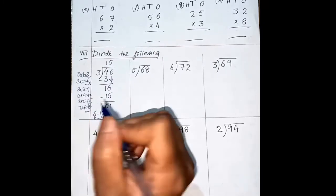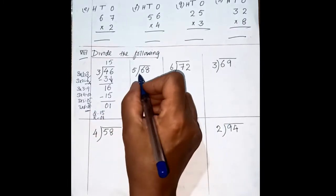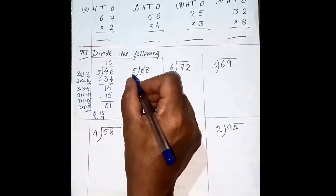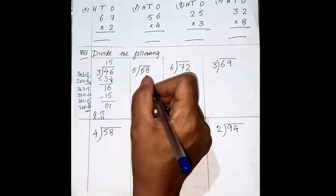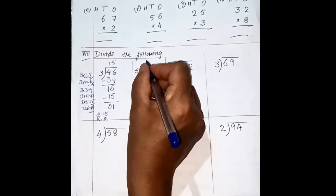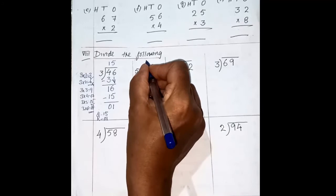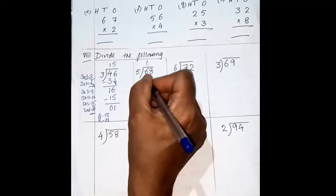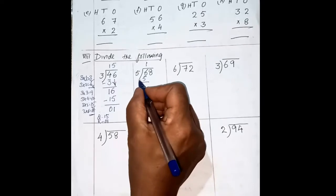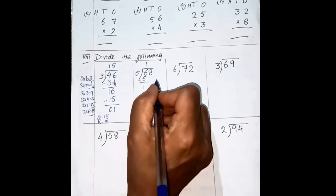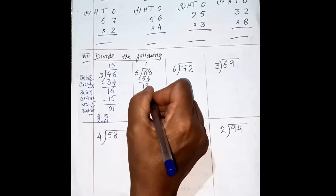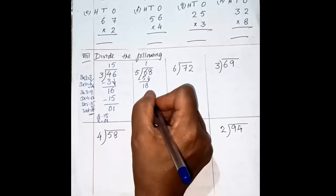Understood? Look at the next one. Check the first number: 6 is greater than 5, so these are 2-step sums. 5 ones are 5, 5 twos are 10 — we cannot take 10. So 5 ones are 5. Now 6 minus 5 is 1. Bring down the next number here. Now it has become 18.